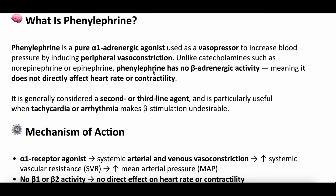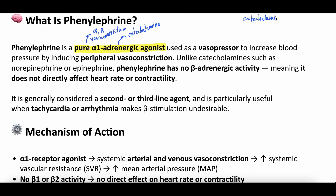What is phenylephrine? Well, phenylephrine is a pure alpha-1 adrenergic agonist. So pure alpha-1 means this only acts on alpha-1 receptors. Alpha-1 receptors are in blood vessels and they cause vasoconstriction. Adrenergic is essentially catecholamine-based. So this is a catecholamine-based vasopressor because it works on catecholamine receptors. We divide vasopressors into catecholamine or adrenergic — these are kind of synonyms — and non-adrenergic or non-catecholaminergic vasopressors.